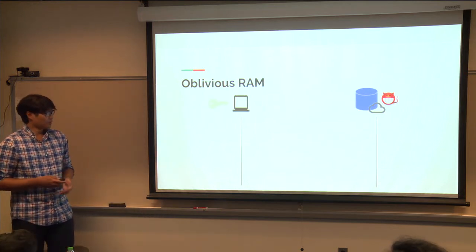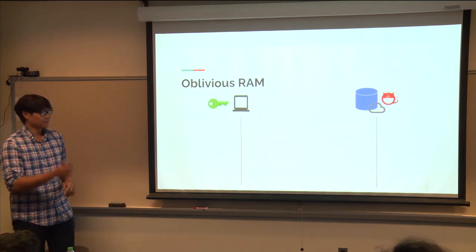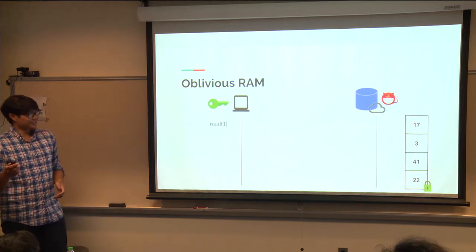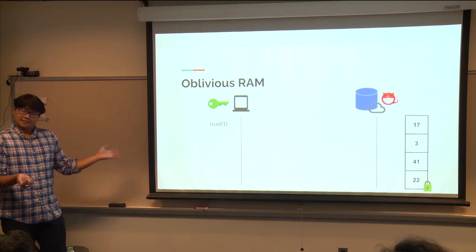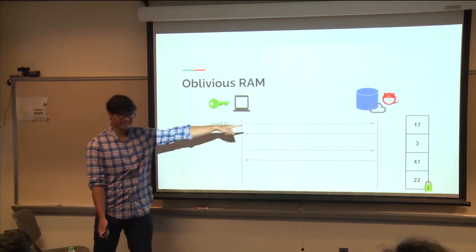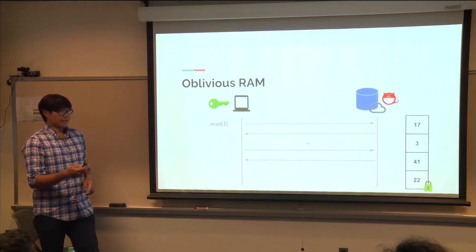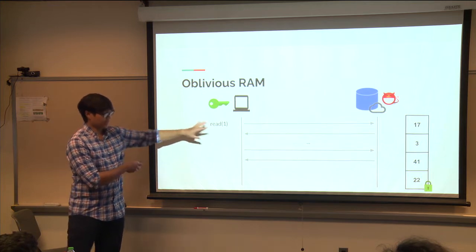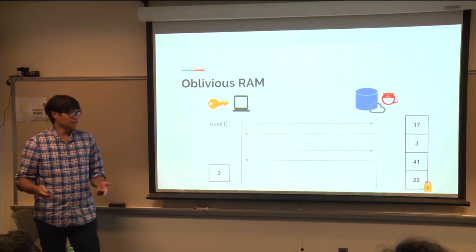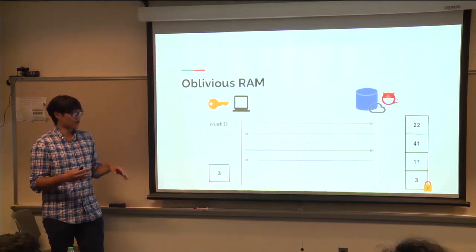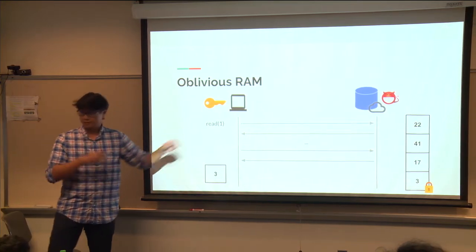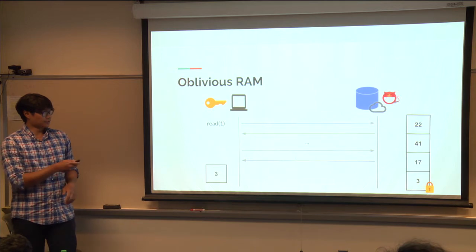What we have to do in the oblivious world is far more complicated. We can't just access the block directly. Not only do you have to read something, but you also have to refresh your key after every operation, and the data is shuffled. To obtain obliviousness, you must continuously update and refresh both the keys and the data ordering.